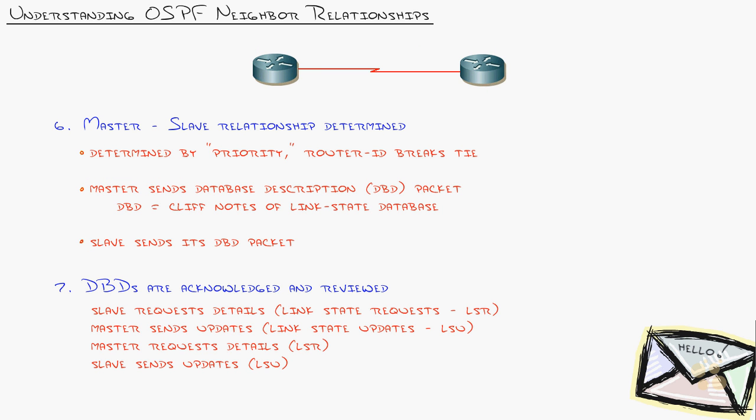The neighbor relationship is formed. Now we send data. The next step is determining the master and slave relationship. The routers talk and decide who sends data first. Some perspective: OSPF was developed 30 years ago when 300 baud modems were everywhere and every bit of bandwidth mattered. Nowadays, constraints like processing power and bandwidth are nowhere near what they were 30 years ago. You need that perspective for these steps.